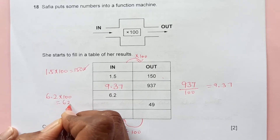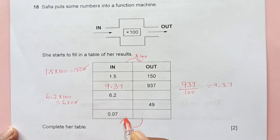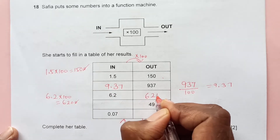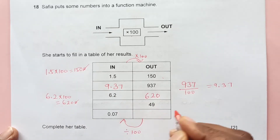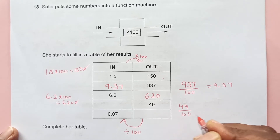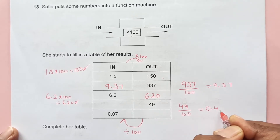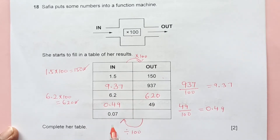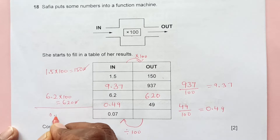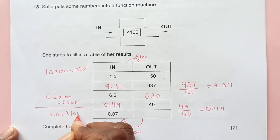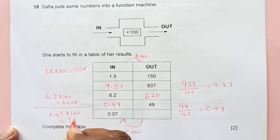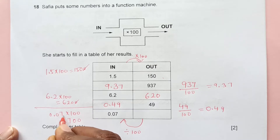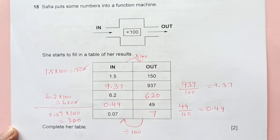Going right to left, divide by 100: the next value becomes 0.49. Then 0.07 times 100 — there are two decimal places, so moving the decimal two places right gives 7. So the final answer for that entry is 7.